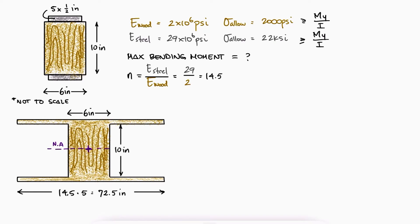This means that for the bending stress, the maximum y value is 5 inches for the wood and 5.5 inches for the steel.